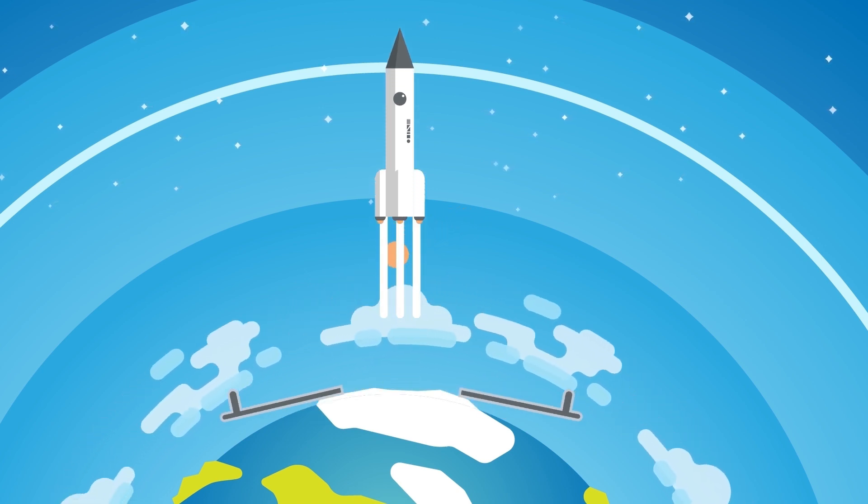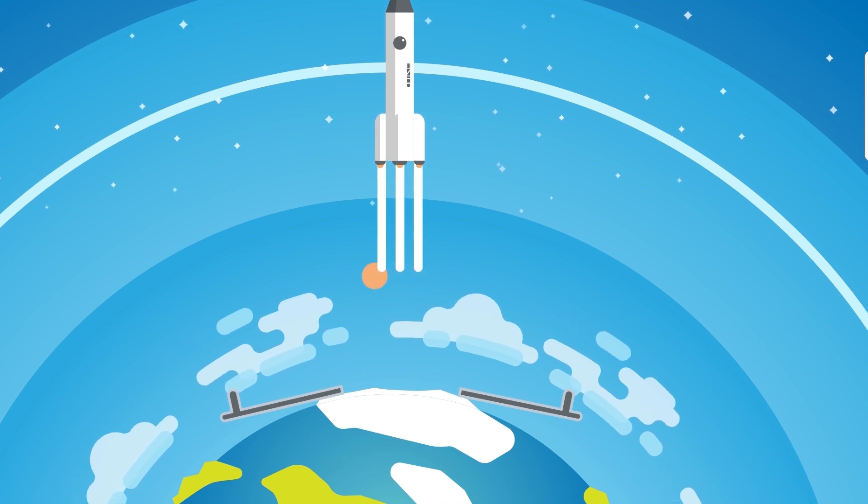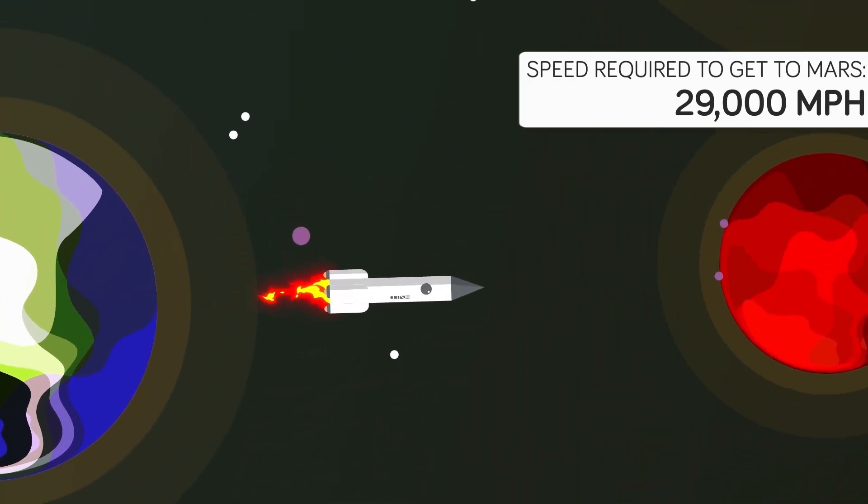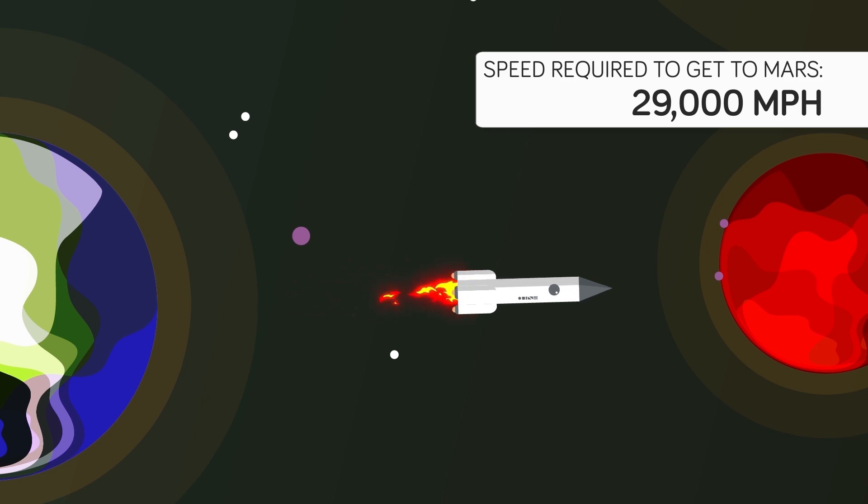As a comparison, the launch speed needed for a probe to overcome Earth's gravity is around 25,000 miles per hour. Probes accelerating to get to Mars require a speed of 29,000 miles per hour, not that big of a difference from the launch speed.